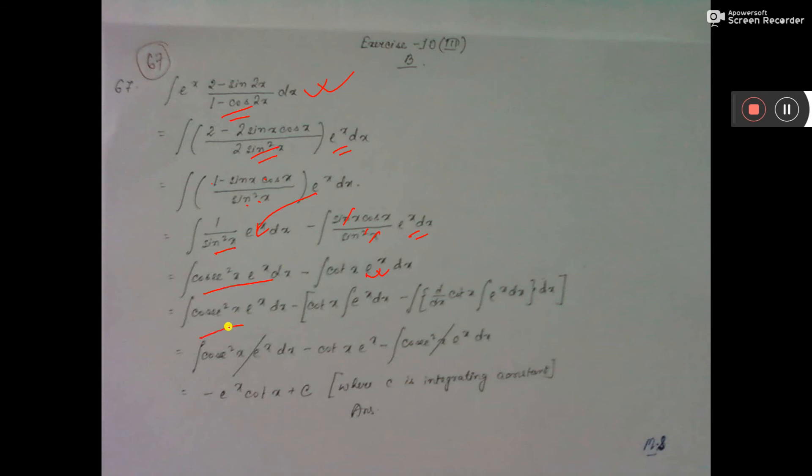Now this one you keep as it is and this one you break down u into v. So u integration v dx minus d dx of u integration v dx total dx. So e to the power x is e to the power x, cot x differentiation is minus cosec square x.